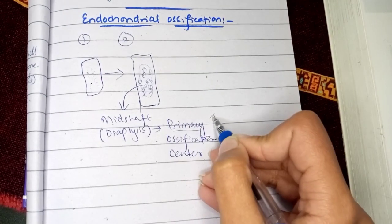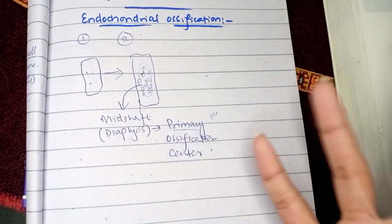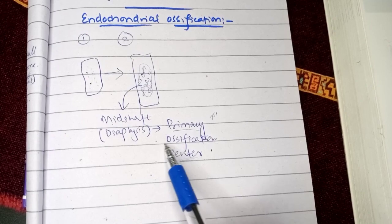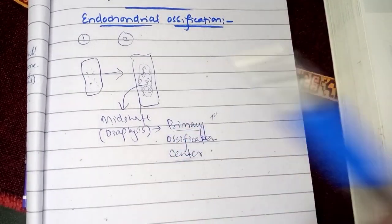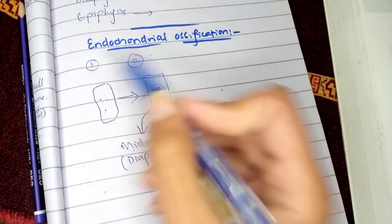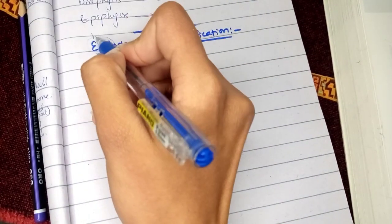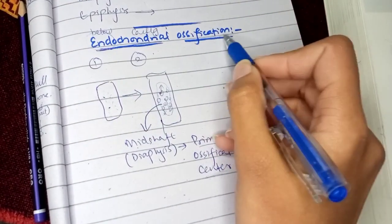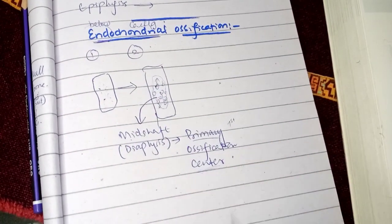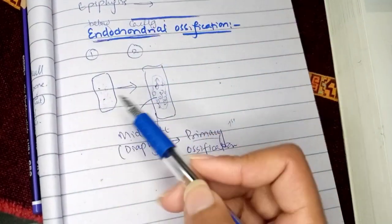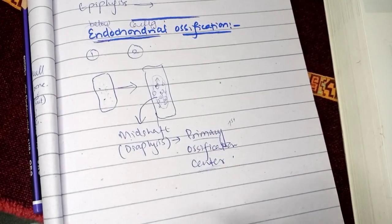The term 'endochondral' means: endo = below or within, chondral = cartilage, ossification = process of bone formation. As the bone is being formed within the cartilage, forming inside the cartilage, that is why this process is referred to as endochondral ossification.